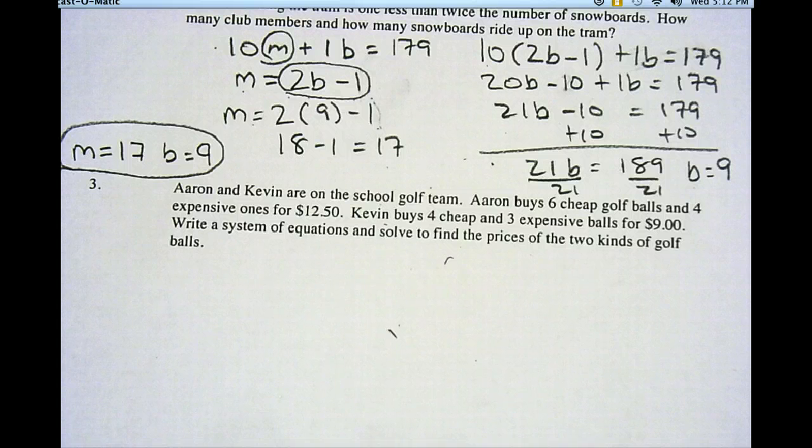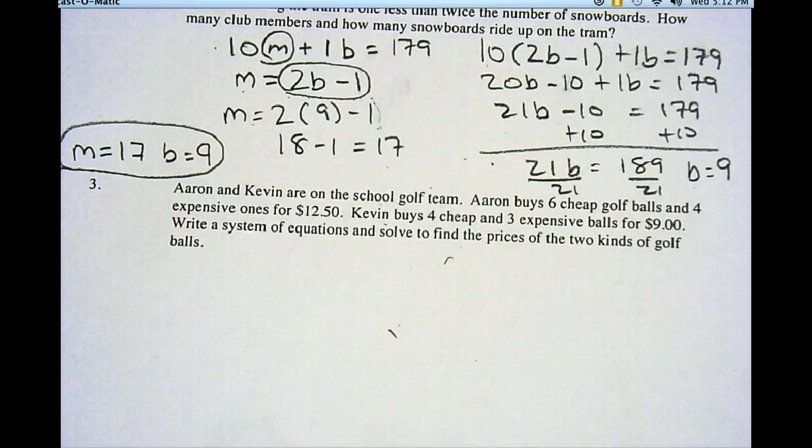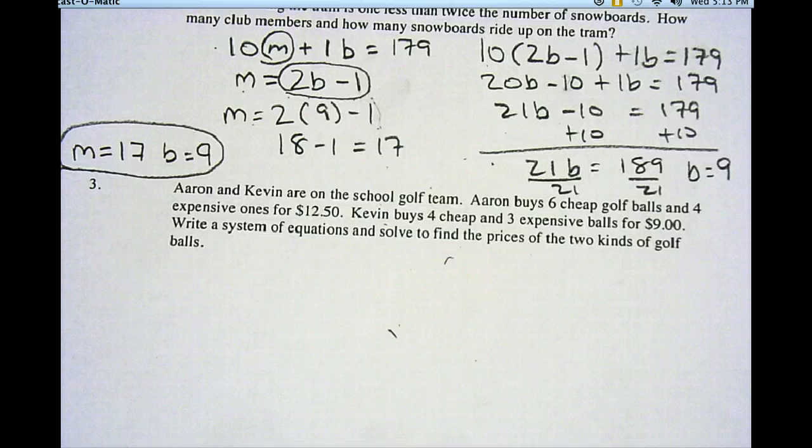Aaron and Kevin are on the school golf team. Aaron buys six cheap golf balls and four expensive ones for $12.50. Kevin buys four cheap balls and three expensive golf balls for $9.00. Write a system of equations and solve for the prices of the two kinds of golf balls.